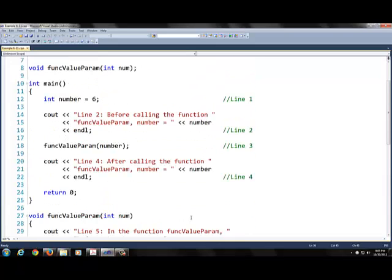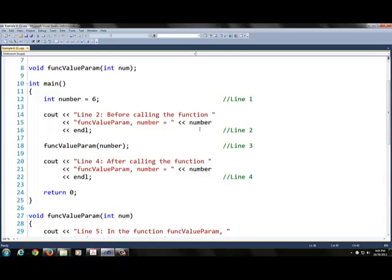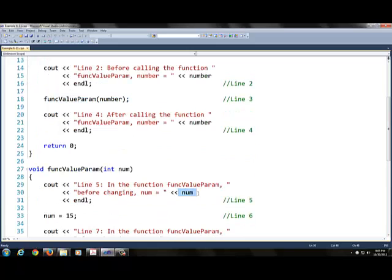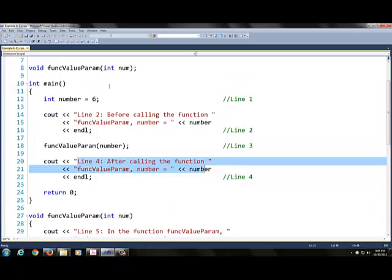So it's going to say the first output is going to have 6, function number, pass number in this right now. Now it's going to give it another 6, then it's going to give it 15. And the last time, after you call the function funcValueParam, this should take you revert back to number 6.